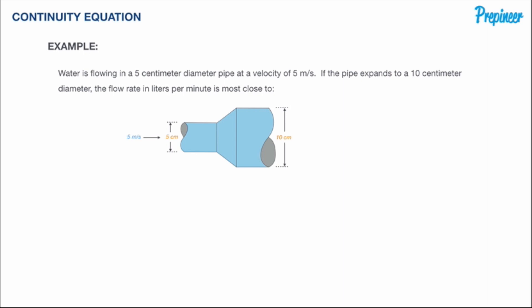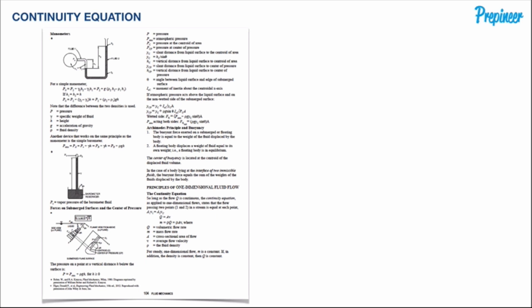Water is flowing in a 5 centimeter diameter pipe at a velocity of 5 meters per second. If the pipe expands to a 10 centimeter diameter, the flow rate in liters per minute is most close to what?